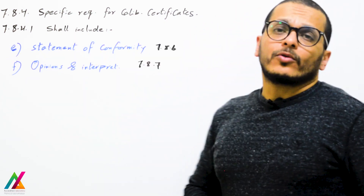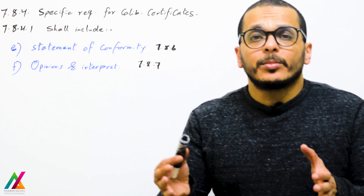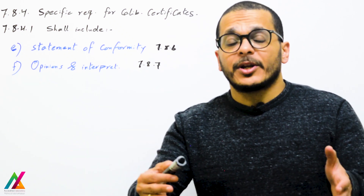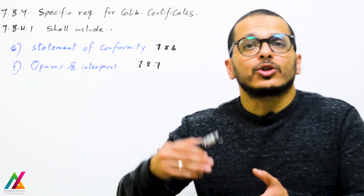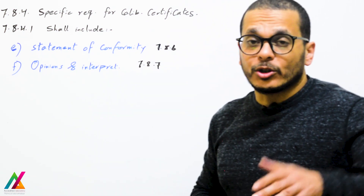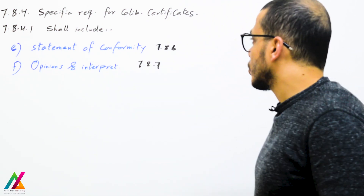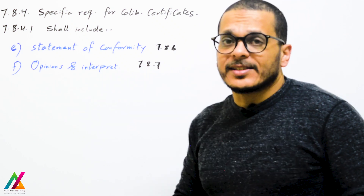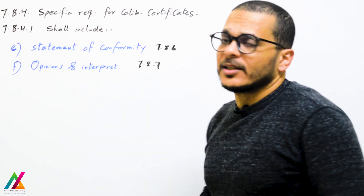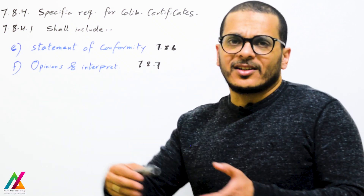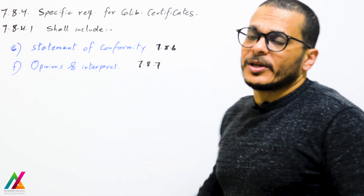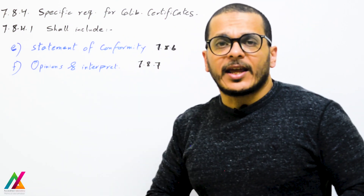A statement of conformity — that the equipment conforms to the specification after calibration and was accepted according to specific acceptance criteria per the standard used — shall also be included. This will be explained in clause 7.8.6 in detail. Opinions and interpretation, if required by the customer, shall also be included and will be explained in clause 7.8.7.